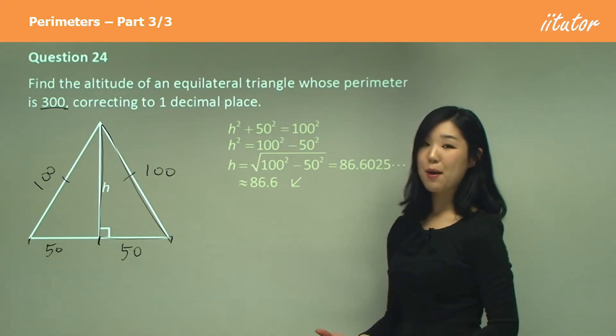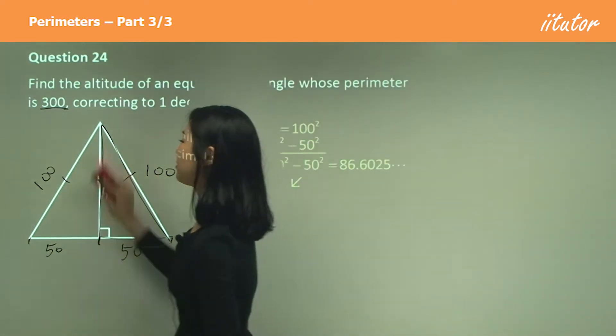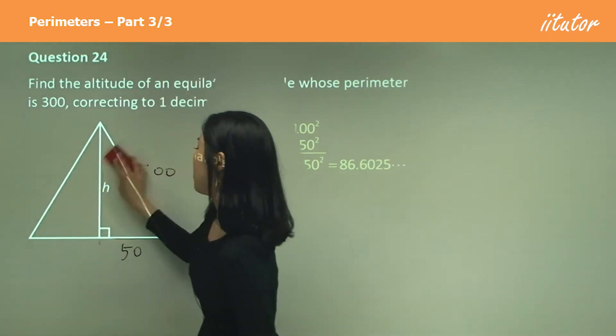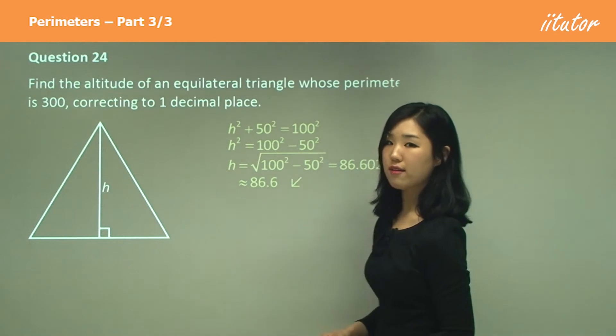Again, just using Pythagoras theorem. But you've got to be able to identify from the question that this is an equilateral triangle, so all sides are equal. Make sure you identify that first.